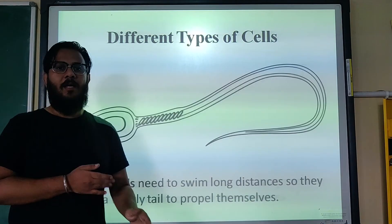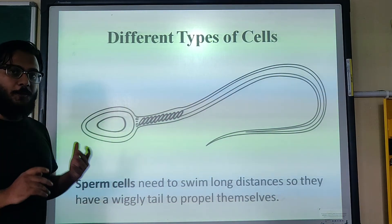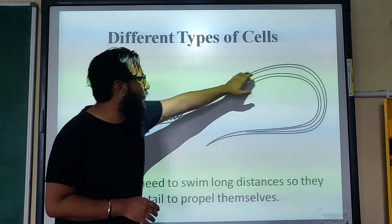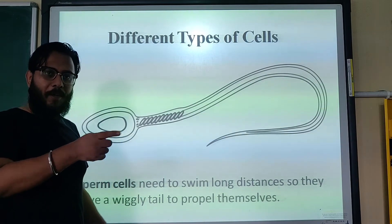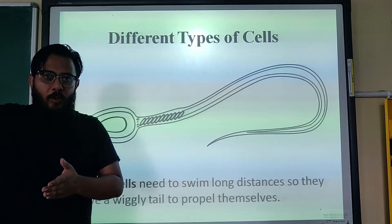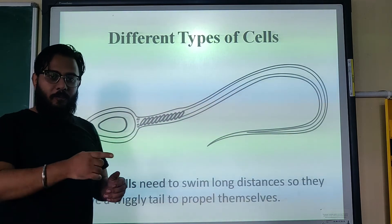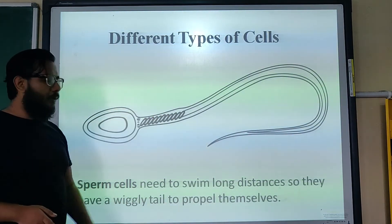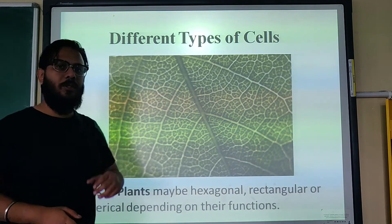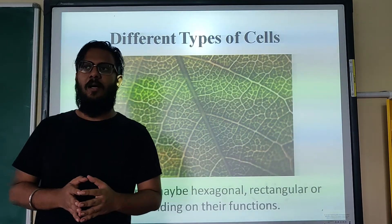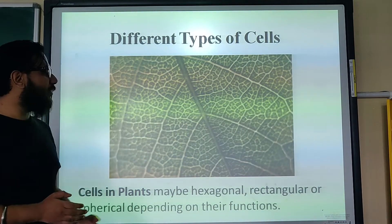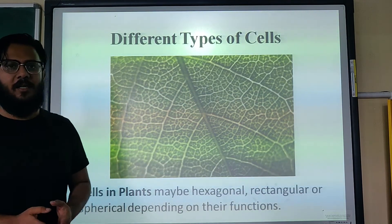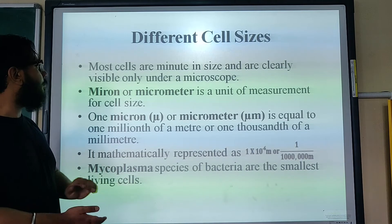Sperm cells need to swim long distances, so they have a tail which acts as a propeller, pushing them forward — similar to how fish use their tails to move. Now, cells in plants are of different shapes: hexagonal, rectangular, or spherical, depending on their functions.